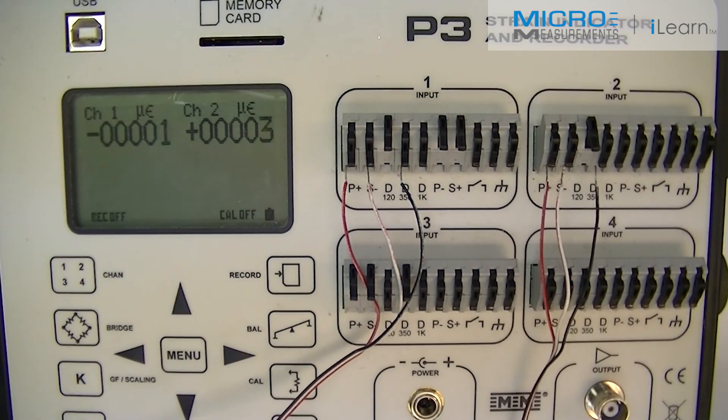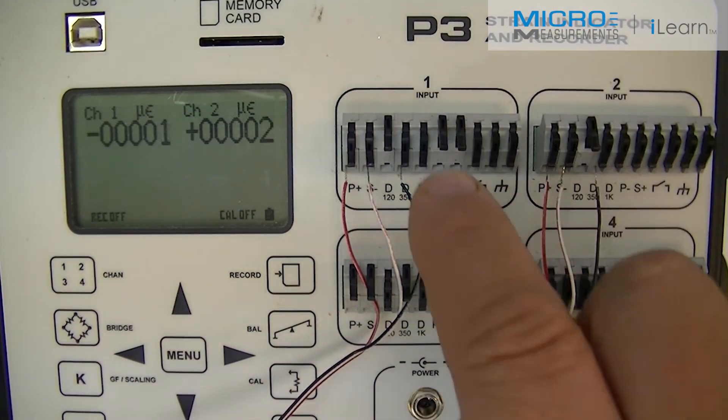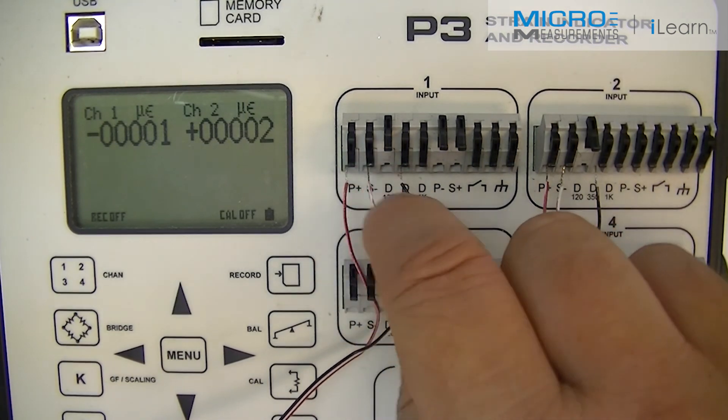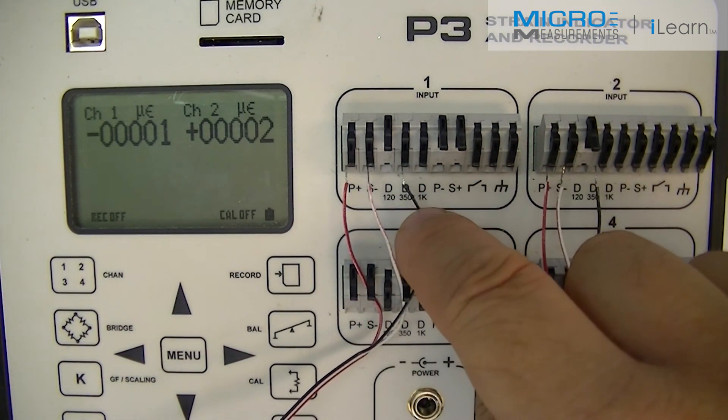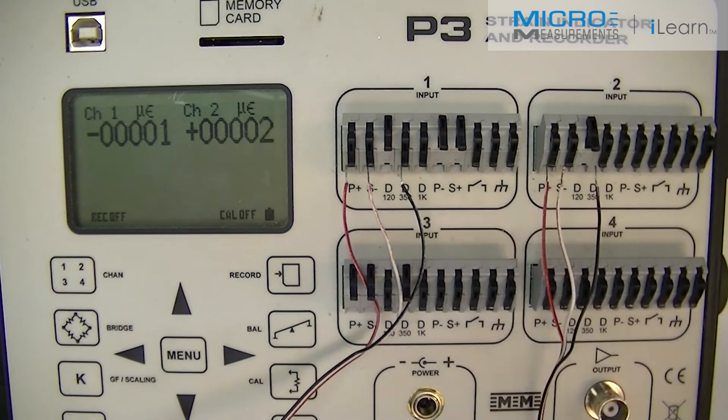Now, I've already connected this red to P+, white to signal negative, and the black wire connects to the internal D350 dummy resistor. Same for both channels.